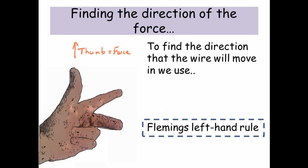For Fleming's left-hand rule, your thumb is the force, your first finger is the magnetic field, and your second finger is the current. The first finger, the magnetic field goes from north to south. With the second finger, conventional current goes from positive to negative. And your thumb shows you the direction that the wire will move in.